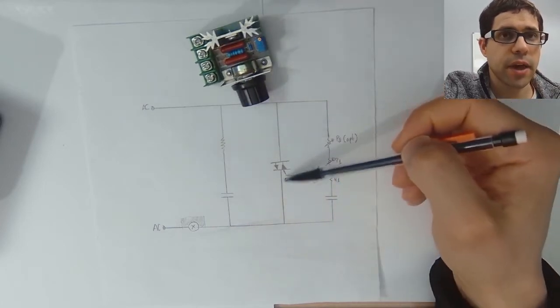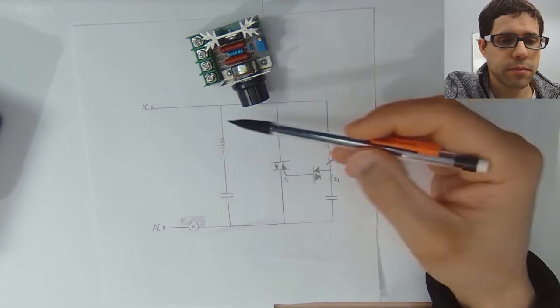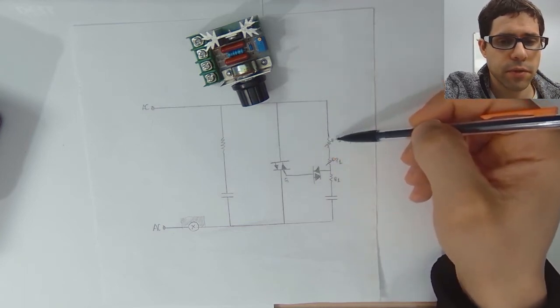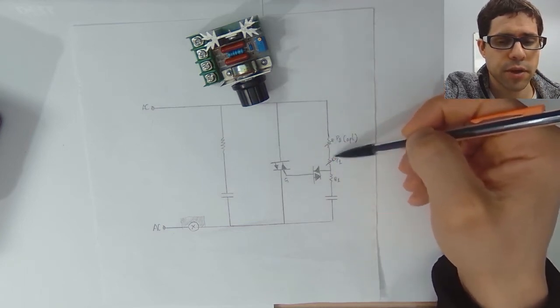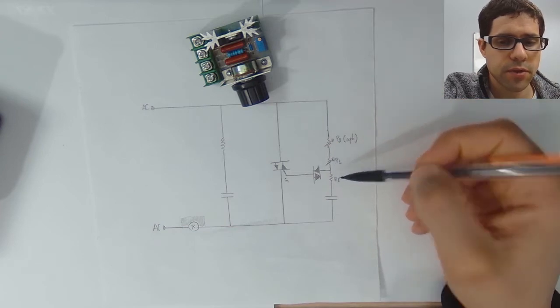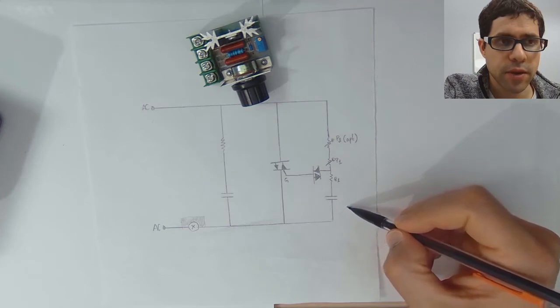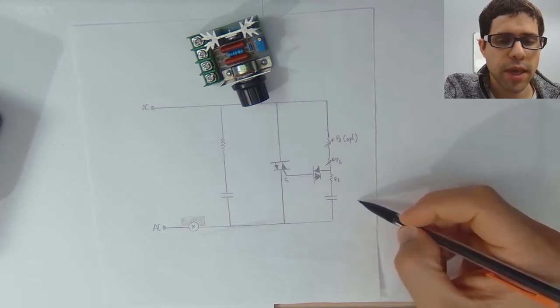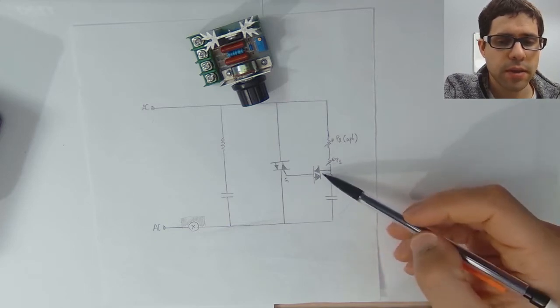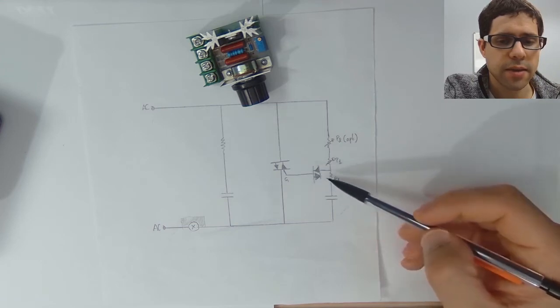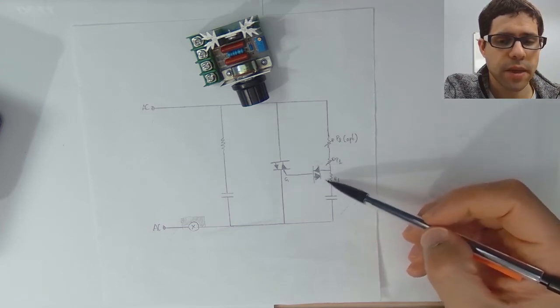When the mains is applied for the first time, this triac is in open circuit. Current will flow through this set of resistors—the potentiometer, the fixed resistor, and the resistor here—and it will start charging this capacitor. Voltage will start to increase over time. When it gets to about 30 volts, this diac breaks down.